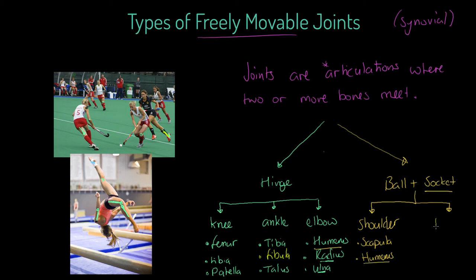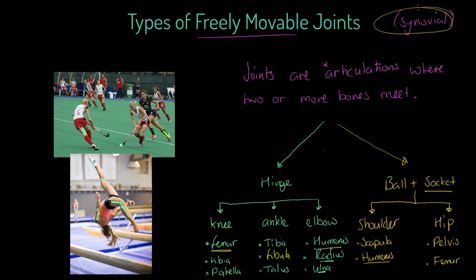We're going to get a similar thing at the hip with the femur. At the hip, we get the articulation of the pelvis — you can say ilium as well — and that joins with the femur, the upper leg bone. So the femur articulates at both the knee and above at the hip. These are the articulating bones and the types of freely movable joints you should be aware of. Just note there are other synovial joints, but we're not going to look at them in this particular session.